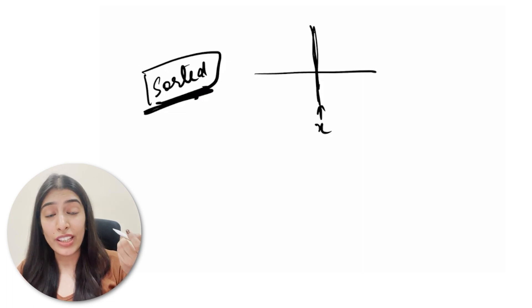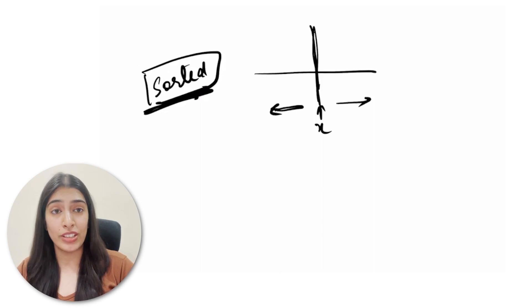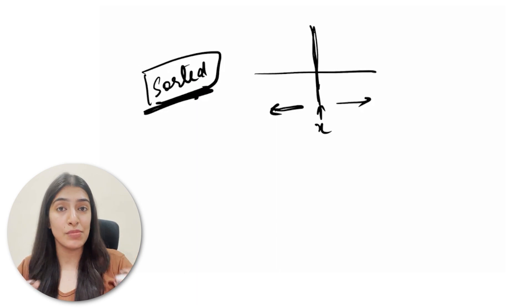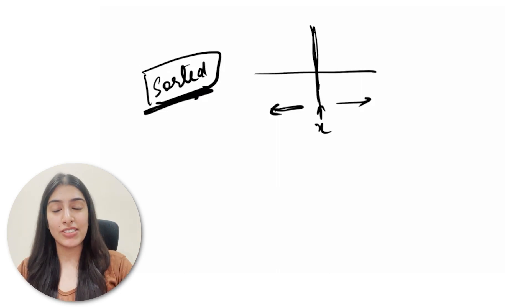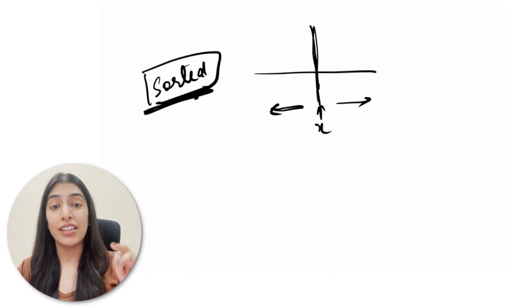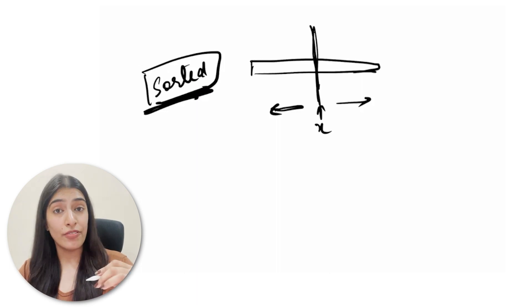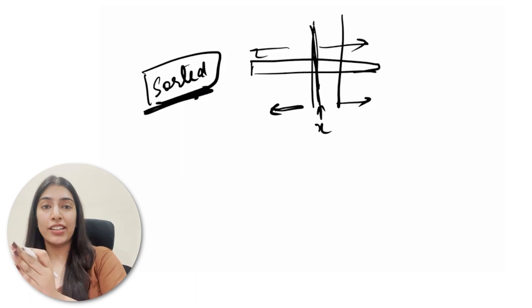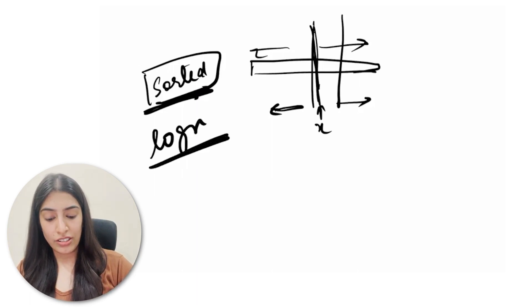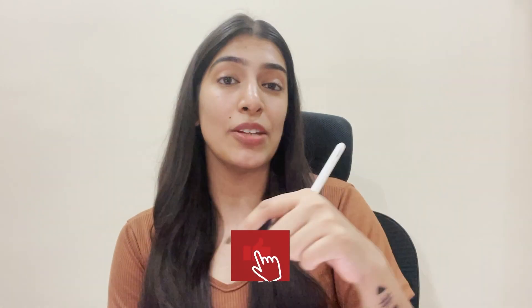If the array is not sorted, you cannot determine whether x is on the left or right side — it could be anywhere. So the elements must be sorted to apply binary search. You can sort them first if needed, but binary search requires sorted input. The time complexity of binary search is O(log n) — we are dividing the array in half every iteration, so the total iterations are log n. This is a very important point to remember. Tomorrow we will write the code — please show up, press the bell icon, and be consistent with me. Thank you, see you!